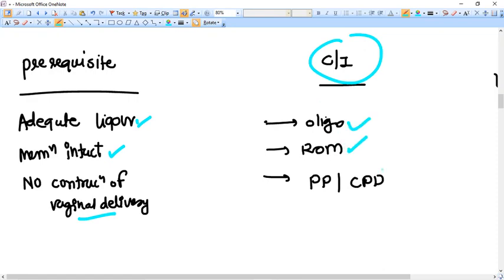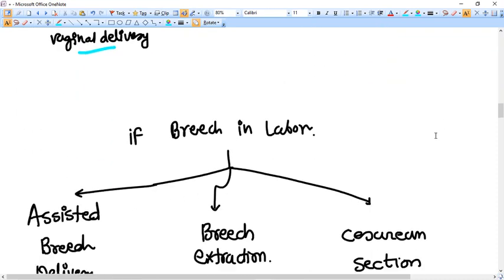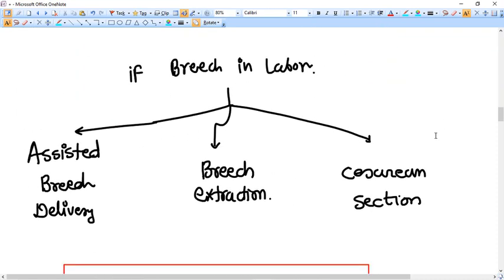That is oligohydramnios, rupture of membrane, the contraindication to vaginal delivery like placenta previa, CPD, etc.